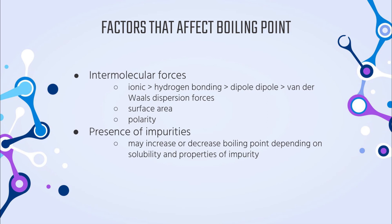Moving on from the melting point, we now discuss the factors that affect boiling point. Like melting point, the boiling point of a compound is highly affected by the intermolecular forces present, such as hydrogen bonding, dipole-dipole interactions, and Van der Waals or London dispersion forces. The surface area of the molecule also affects the overall strength of intermolecular forces. Polarity indicates the presence of a dipole moment, which may indicate stronger intermolecular forces. Impurities may also increase or decrease the boiling point depending on solubility and other properties of the impurity.